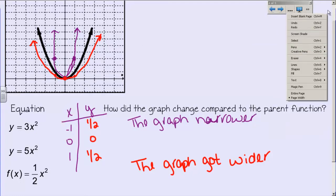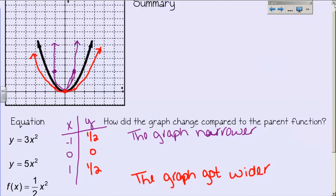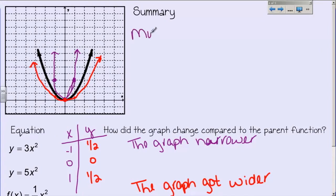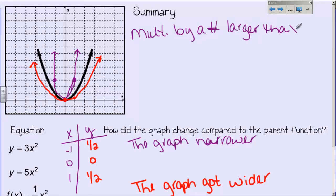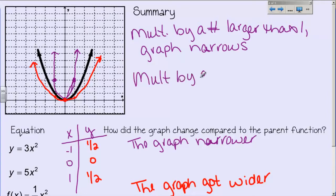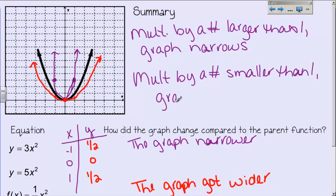To summarize: multiplying x squared by a number larger than 1 makes the graph narrow. Multiplying by a number smaller than 1 makes the graph widen. That's what you need to get from that. If you want to graph the other two equations and see that this is really what happens, go right ahead.